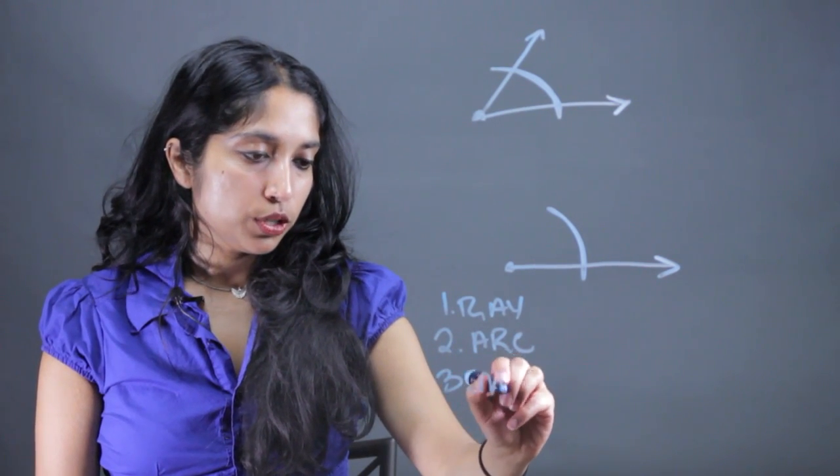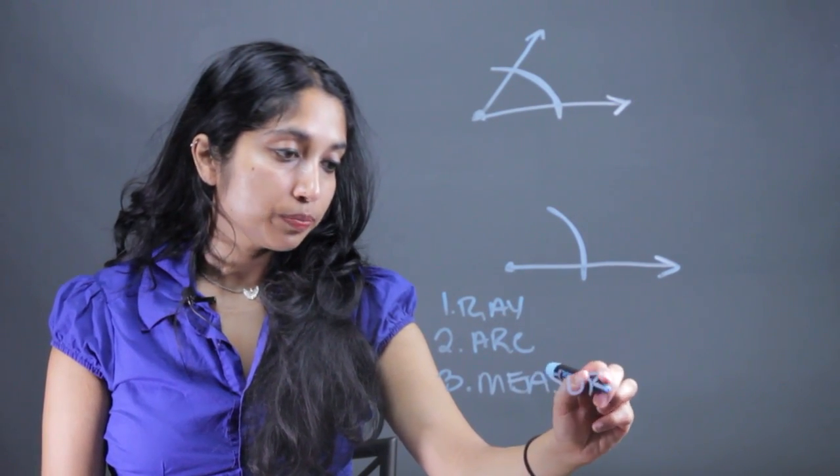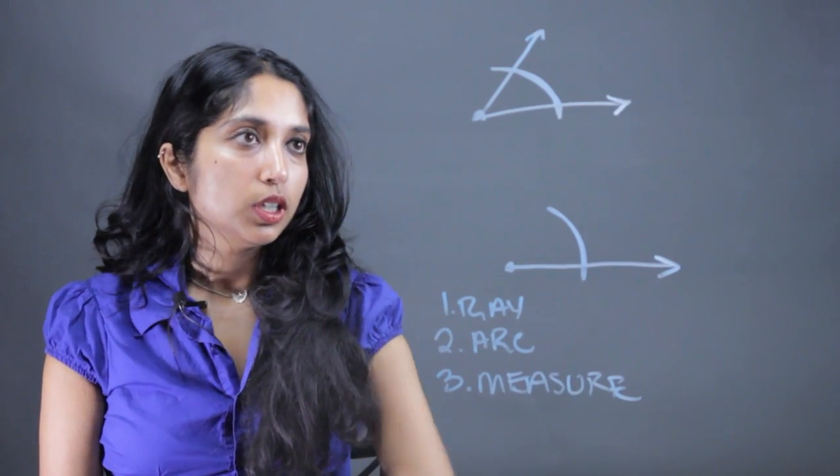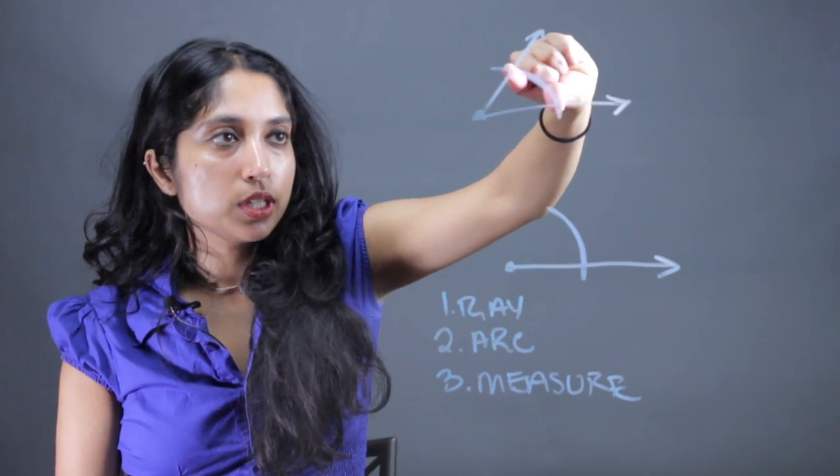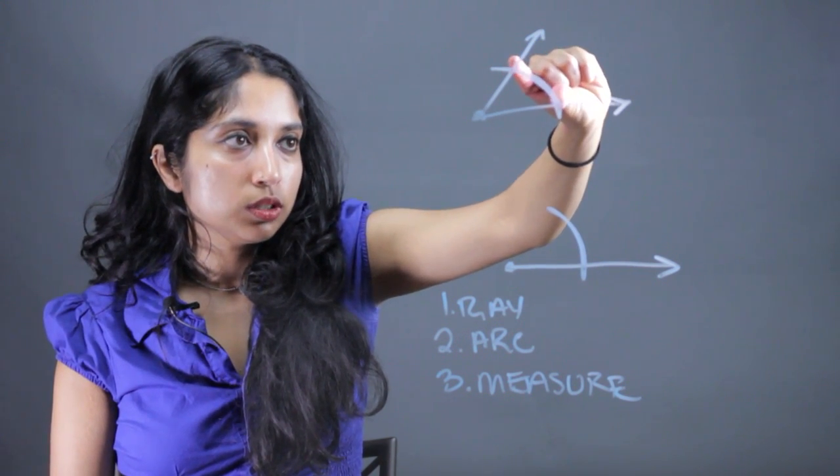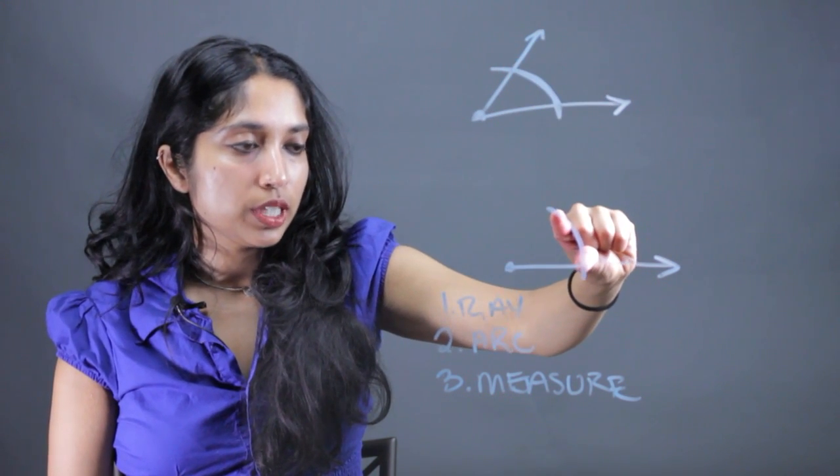And the third thing we're going to do is measure how open this arc is. So take our compass and take this measurement right here—how open this arc goes. And we're going to transfer it down here.